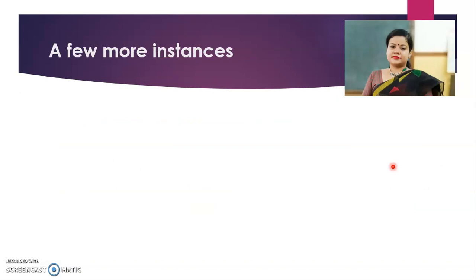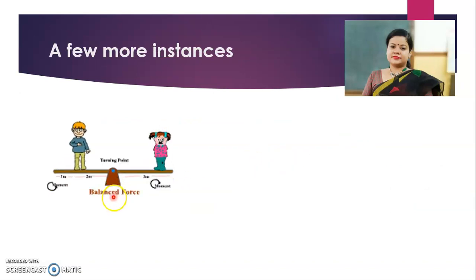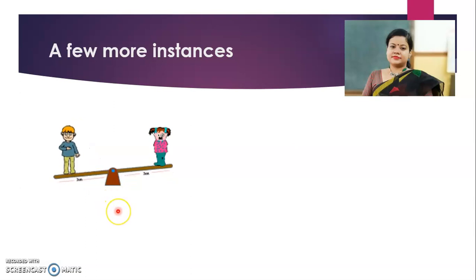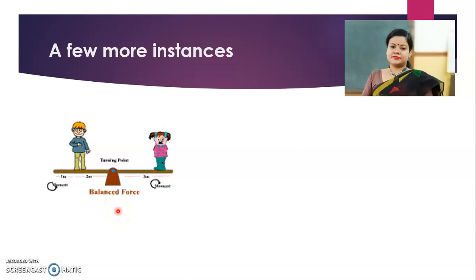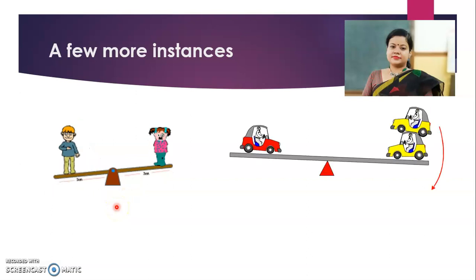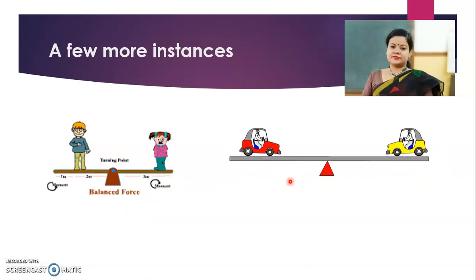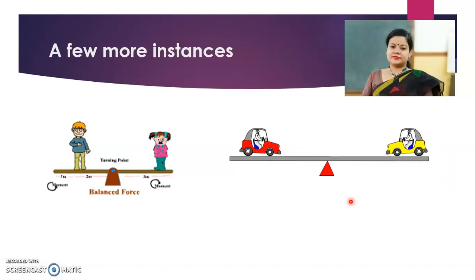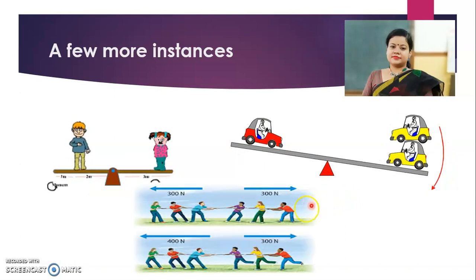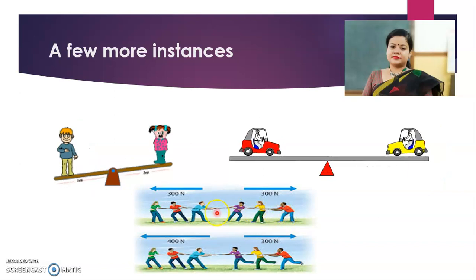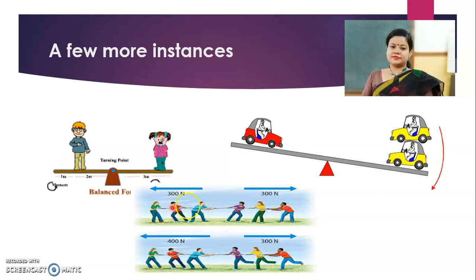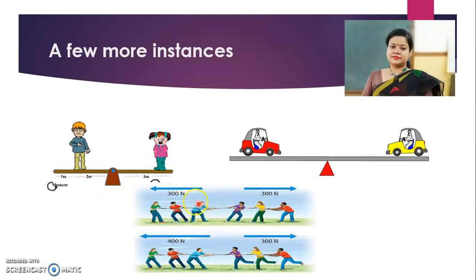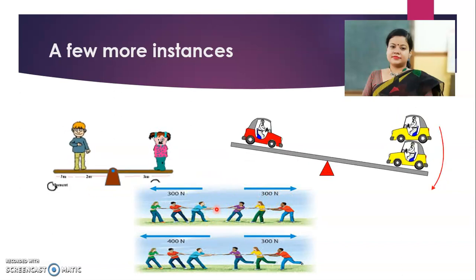A few more instances. This boy and girl are playing balancing. Whenever they maintain the balance, you can see that it remains in an equilibrium state. If the balance is disturbed, they fall down; otherwise they remain steady. Take another example — tug of war. When the two teams are applying the same force on the rope, there is no net movement of the rope.